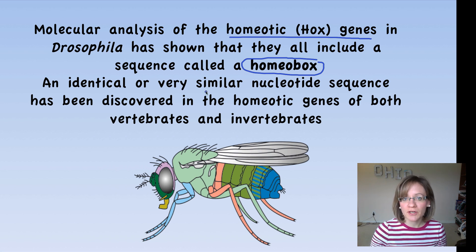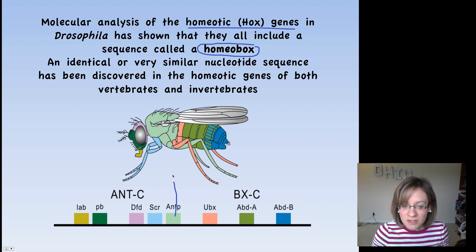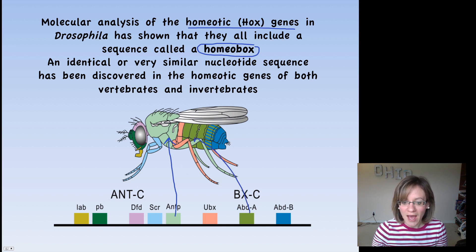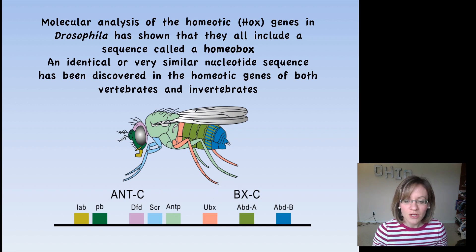So identical and very similar sequences have been found. And so what we're seeing here in these colors is how these different homeoboxes code for very specific segments of the Drosophila body. So this here is coding for that thorax region, and this is coding for the abdomen, and these are coding for the legs. And we're going to see that these similar genes code for the same similar regions in vastly different organisms.